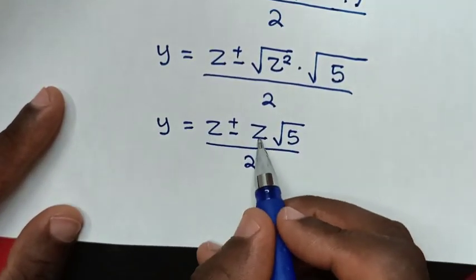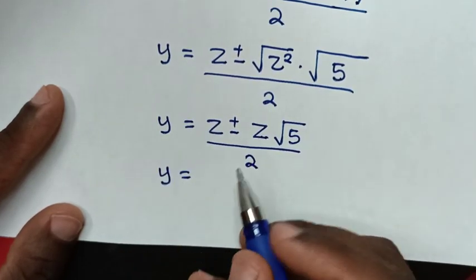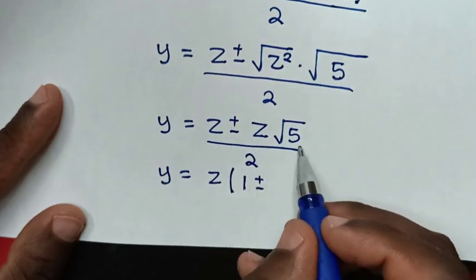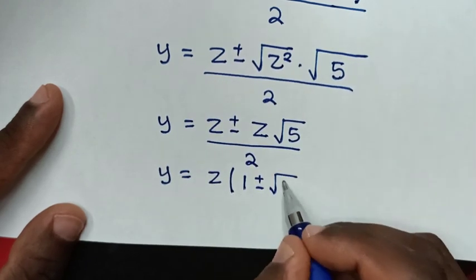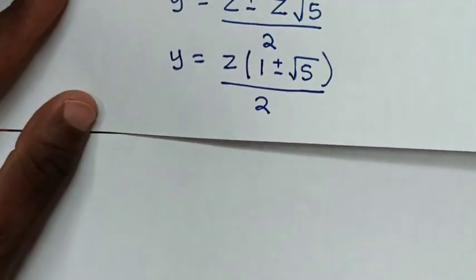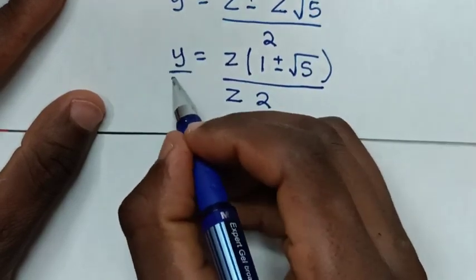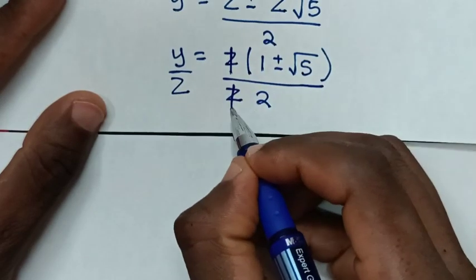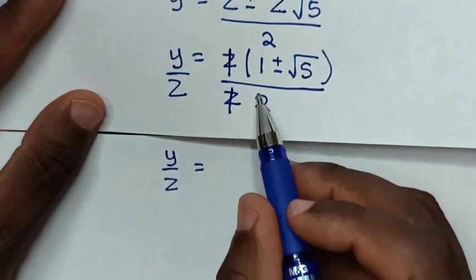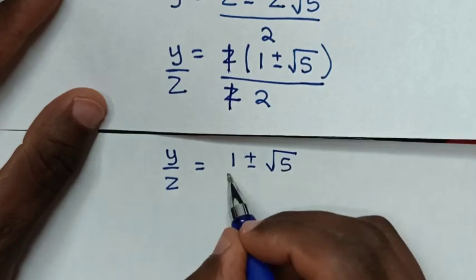In the next step, z is common so we factor it out of the bracket: y = z(1 ± √5) / 2. Then we divide both sides by z, so y/z = (1 ± √5) / 2.